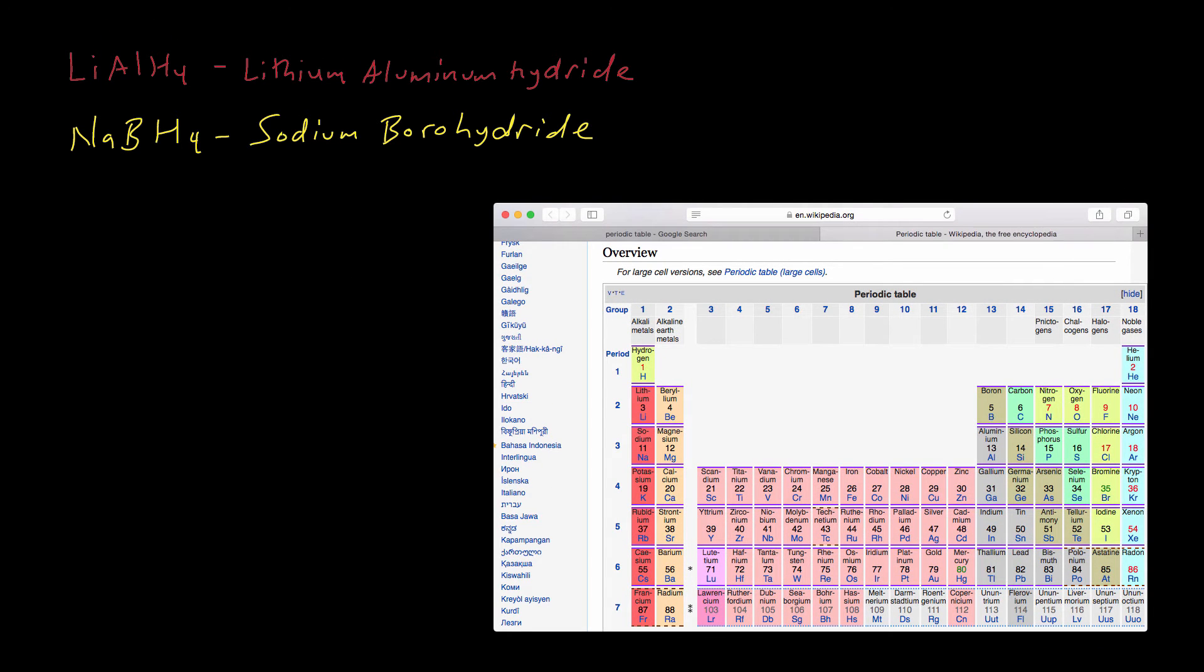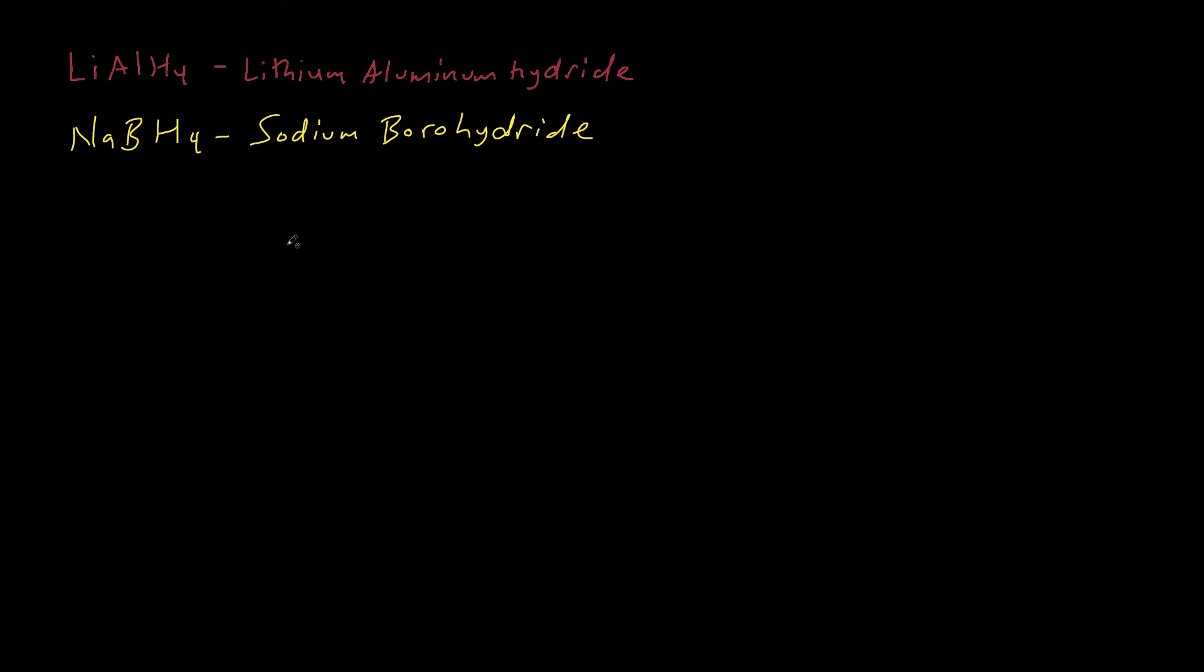So there are two major reducing agents: lithium aluminum hydride and sodium borohydride. I just flashed that periodic table there to show that boron and aluminum are both in group three, go past the transition metals, so they have something in common. Let's look for some similarities here.